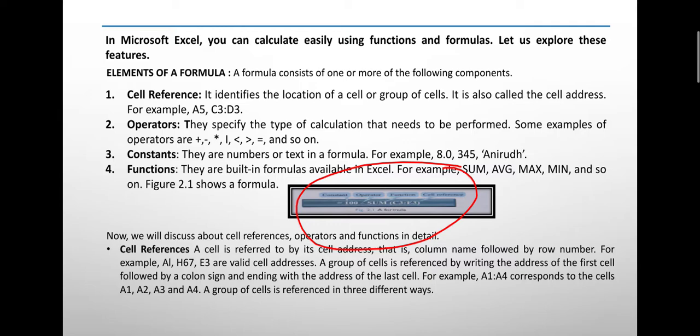Cell reference: A cell is referred by its cell address, that is column name followed by row number. For example, A1, A6, 67, E3 are valid cell addresses. A cell address like A1, A2, A3, A4 is called a cell address or cell reference.